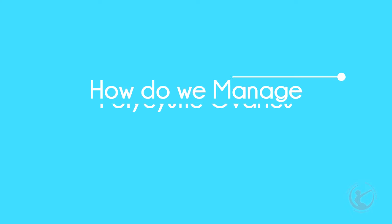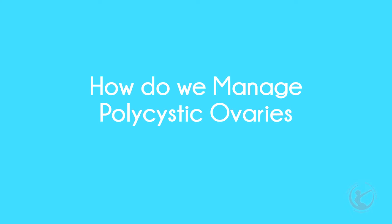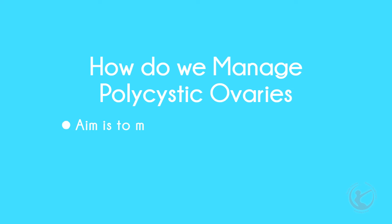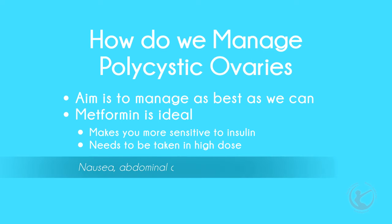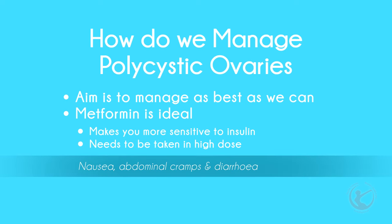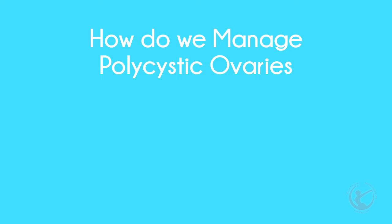So how do we manage polycystic ovaries? Unfortunately, if you have polycystic ovaries, you have this for life, and we aim to manage this the best we can. For the overall treatment of PCOS, metformin is the ideal management. Metformin, a treatment for diabetes, is a drug which makes you more sensitive to insulin and can allow you to get back on an even keel. This only works whilst you are on metformin. Metformin needs to be taken in fairly high doses, and nausea, abdominal cramps, and diarrhea are common. Other anti-diabetic medications are also being trialled.